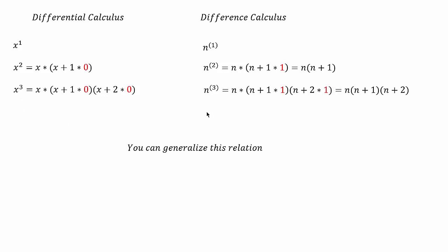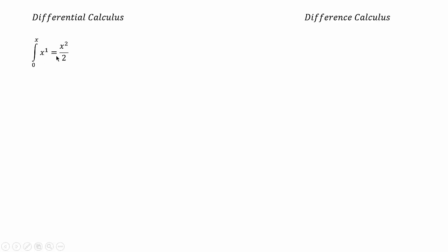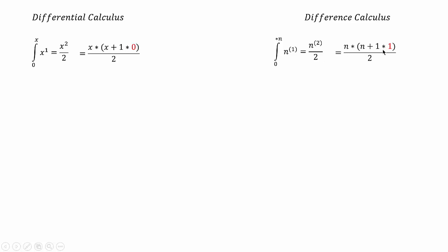After knowing this intuition, let's go to integration. In differential calculus, the integral of x to the power of 1 is x squared by 2 — just add 1 to the power and bring that power to the denominator. This can be represented as x times (x+1) times 0 by 2. In difference calculus, I'm representing the integral with a star sign. It has the same formula as differential calculus: the power is raised by 1 and written in the denominator, which equals n times (n+1) times 1 by 2.